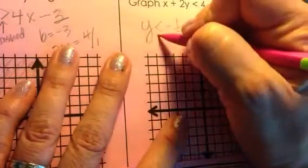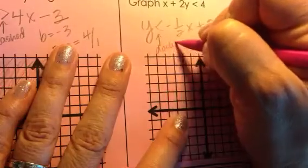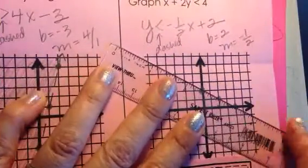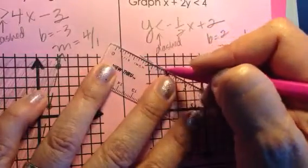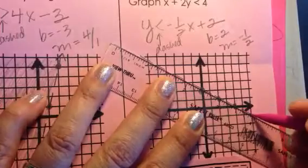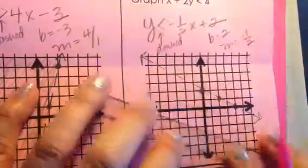Now, again, this is going to lend itself to a dashed boundary line because I don't have that or equal to. So, any solutions, potential solutions that fall on the boundary line would not make this true. They're not included on a dashed boundary line.